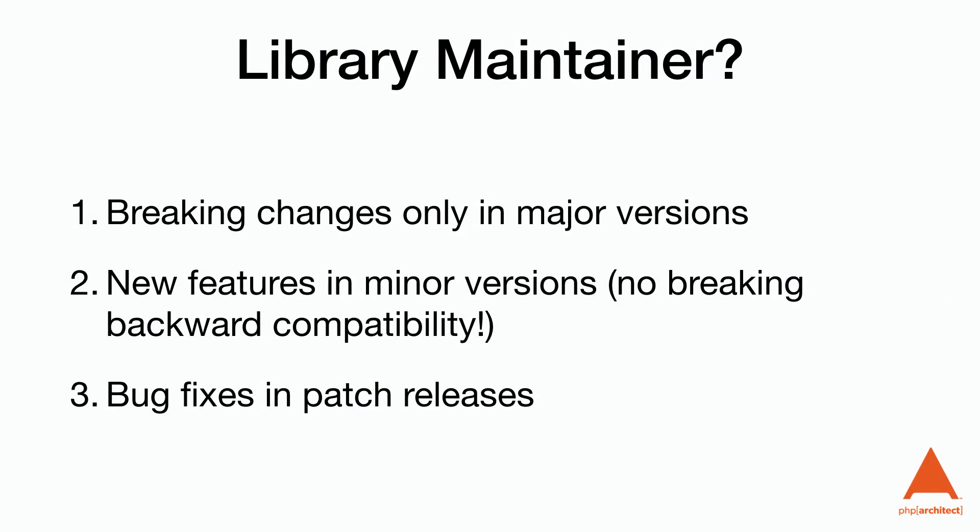As a library maintainer, here are your rules to live by. One: breaking changes only in major versions. Two: new features in minor versions, as long as they don't have breaking backward compatibility issues. Three: bug fixes in patch releases. I like PHP's approach where they deprecate the functionality in minor releases so they can remove it in major releases — something for you to try out as well. If you accidentally release a backward incompatible change as a minor version, it's not the end of the world. Just fix the problem and release a new minor version that restores that backwards compatibility.